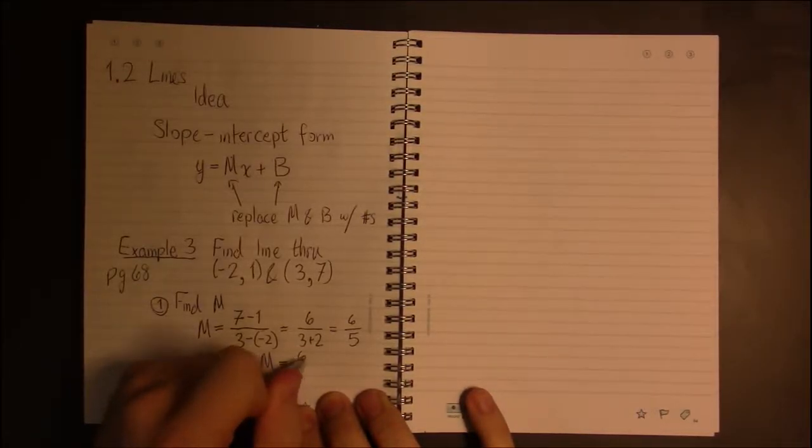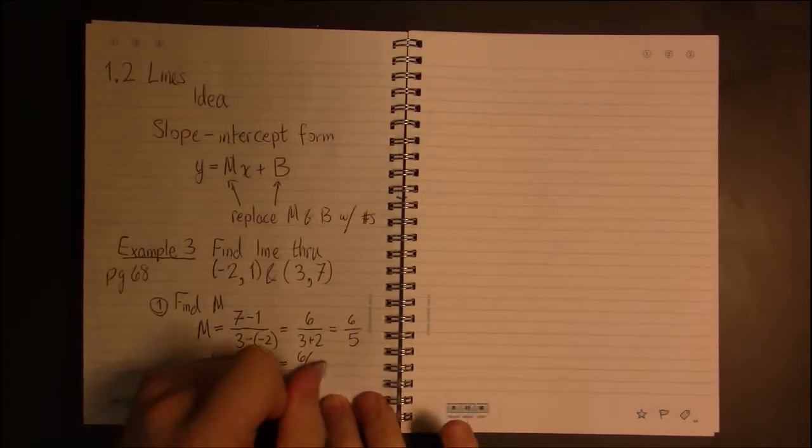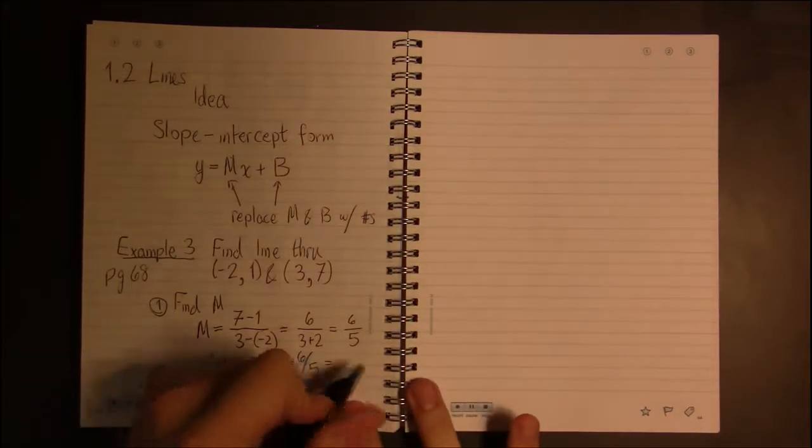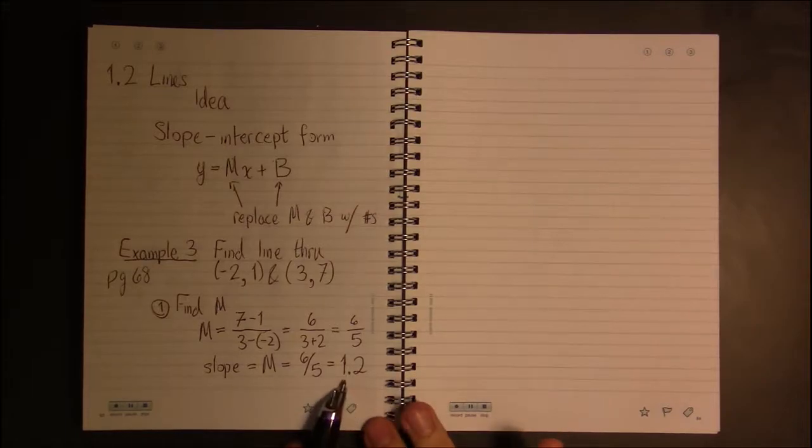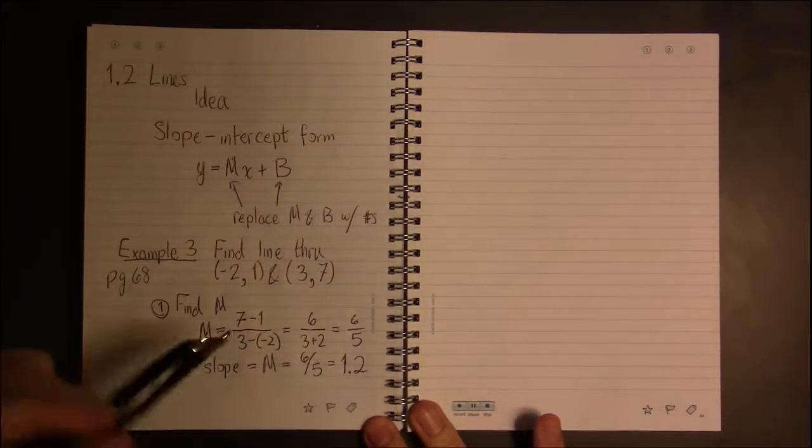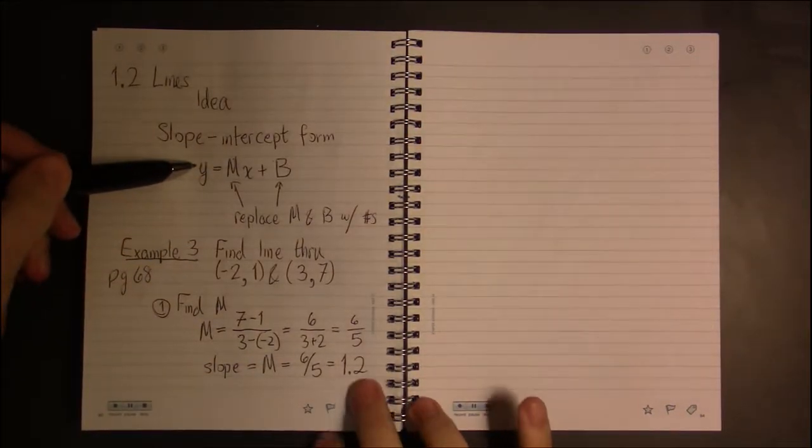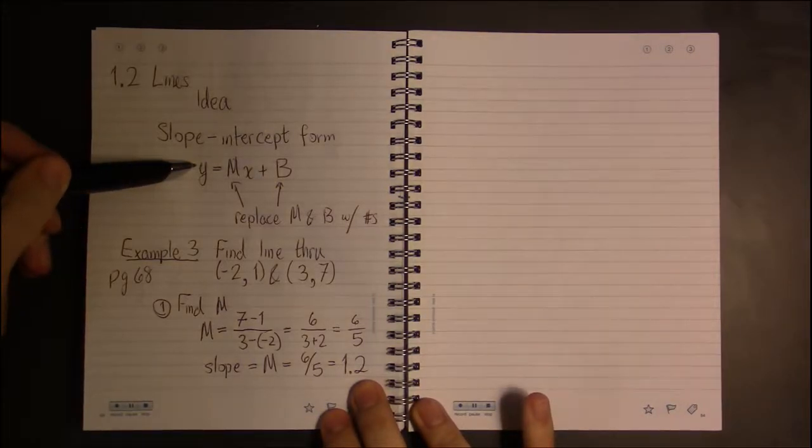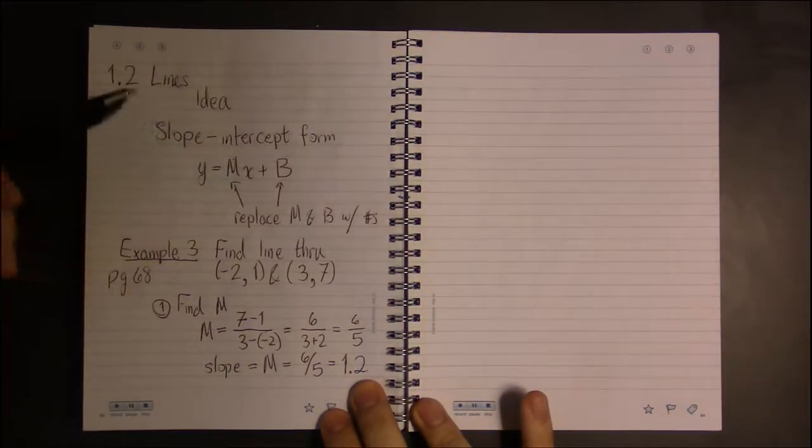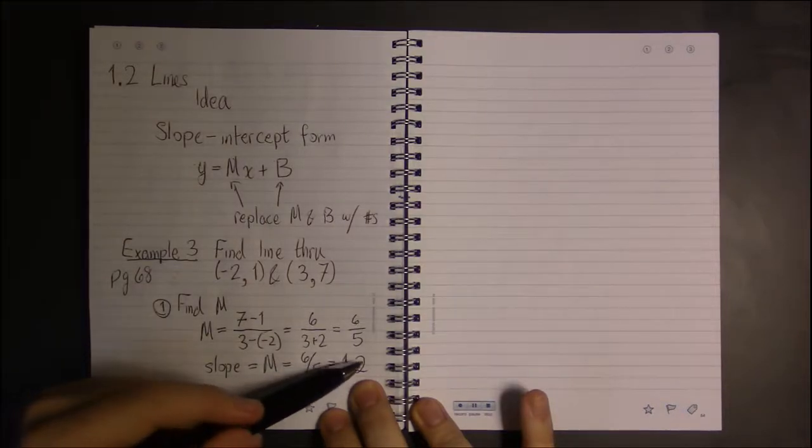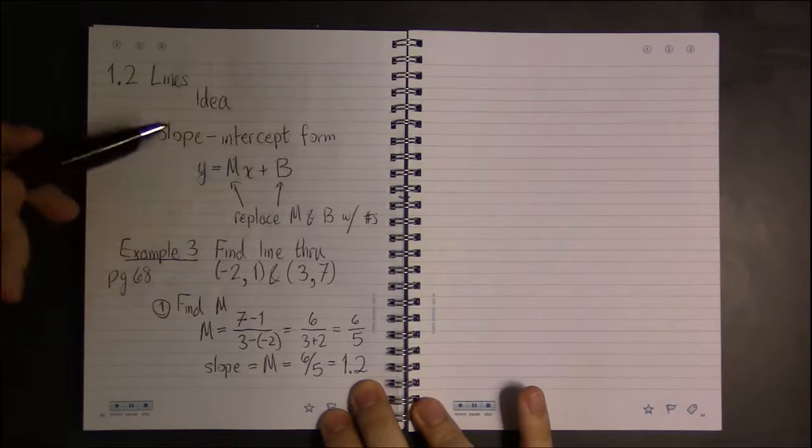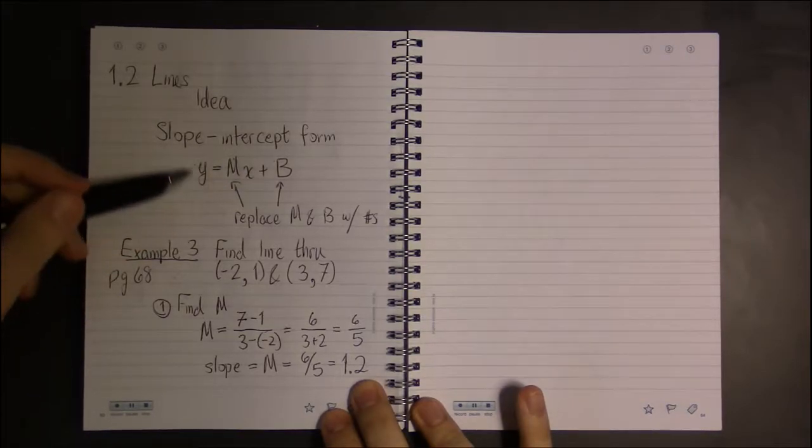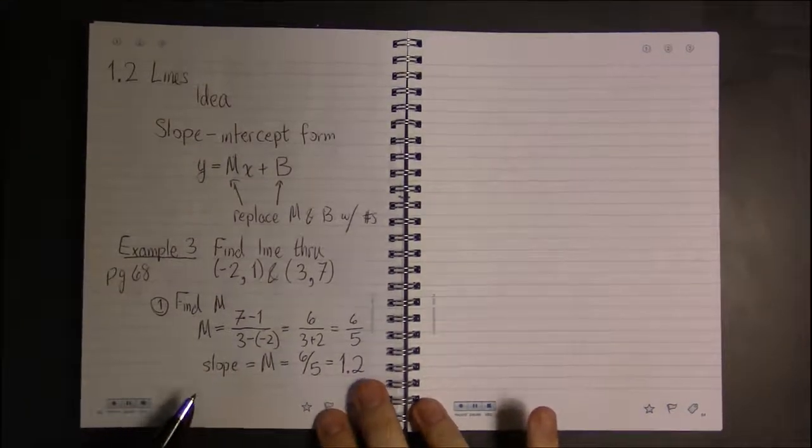And that tells us, or if you prefer, this is 1.2. That tells us that every time x increases by 1, y increases by 1.2. If x increases by 2, then y increases by twice 1.2. However many you increase x by, you increase y by that same amount times 1.2.